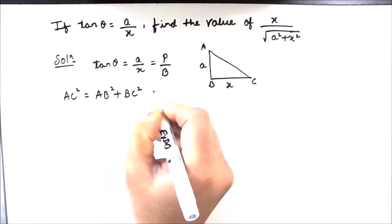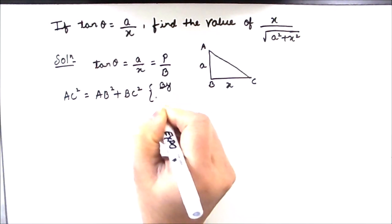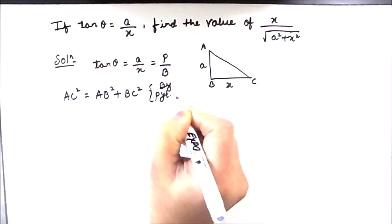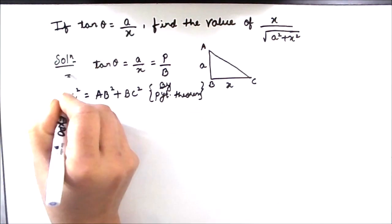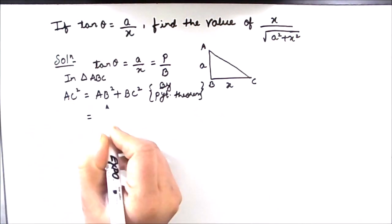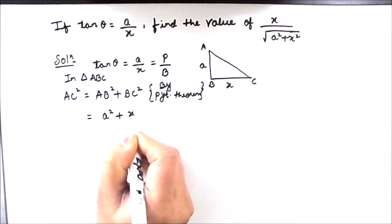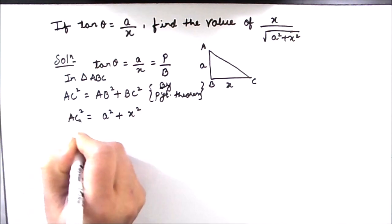By Pythagoras theorem, the triangle is ABC. AB square is a square, BC square is x square, and this is AC square.